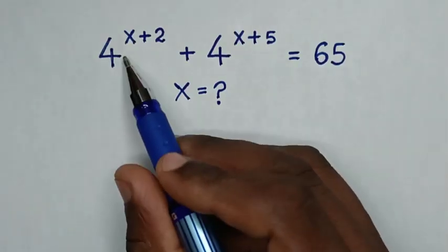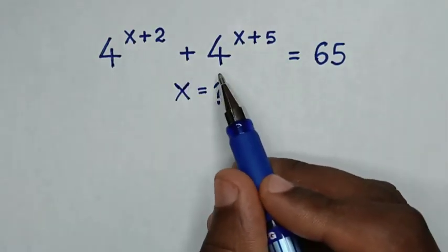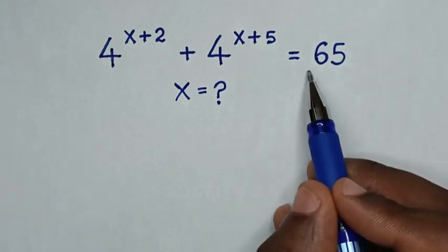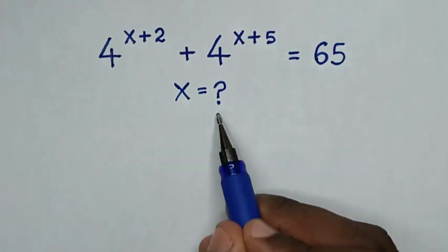Hello, how to solve 4 power of x plus 2 plus 4 power of x plus 5 is equal to 65, to find the value of x.